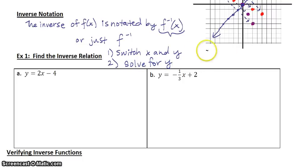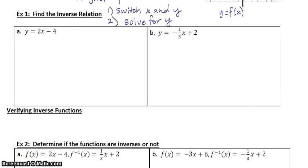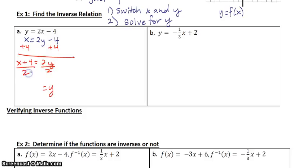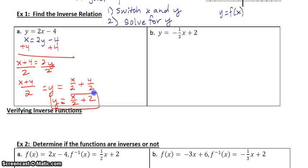Quick side note: sometimes they give you f of x instead of y. Since f of x equals y, you can replace f of x with y before you start. Then for example 1a, step one is to switch x and y. Step two: solve for y — get y all by itself. Add 4 to both sides first, then divide by 2. The book may write it as x over 2 plus 2, splitting the division across each term.